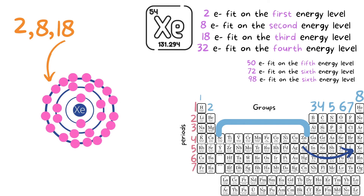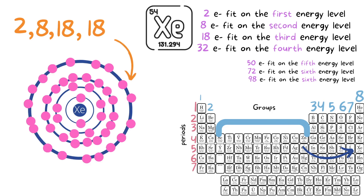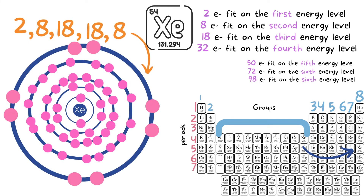So we must accommodate this by placing only 18 electrons in the fourth shell, so that we can finish off with eight in the valence shell, as it's supposed to be. All together, if we count these electrons — two plus eight plus 18 plus 18 plus eight — we get a total of 54 electrons.